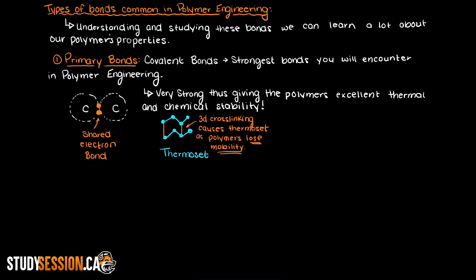So now that we have covered primary bonds, what are the secondary bonds in polymer engineering? Well, there are two secondary bonds of interest in polymer engineering. Firstly, let's talk about van der Waals forces and then go into hydrogen bonding.